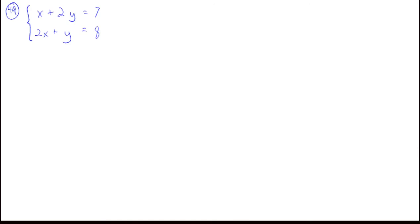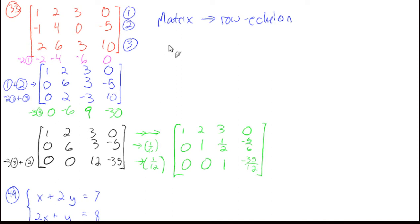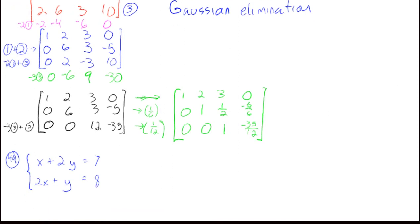Just a vocabulary note: when you take a matrix to row echelon form, what you've done is used Gaussian elimination. That means multiplying rows by numbers, adding rows together, and switching the order of rows to get to that arrangement. That's called Gaussian elimination.